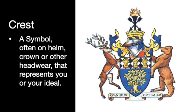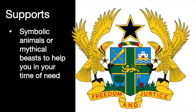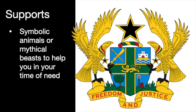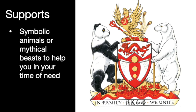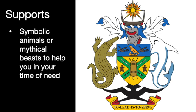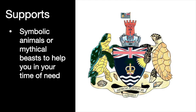The supports on either side are animals or mythical beasts that are there to protect you in your time of need or represent some quality. Like a bear might represent strength, or a deer might represent your willingness to protect yourself with those sharp horns. The symbolism or meaning of the support animals are up to you. Notice that the size of the animals are usually at least as tall as the shield.